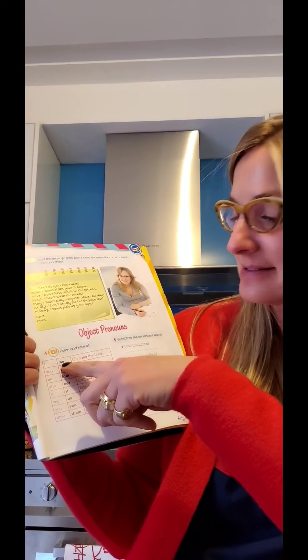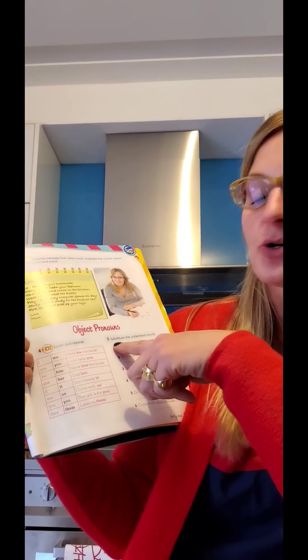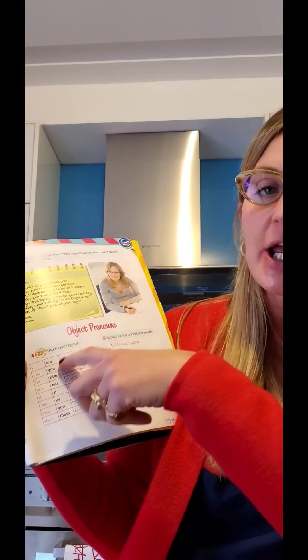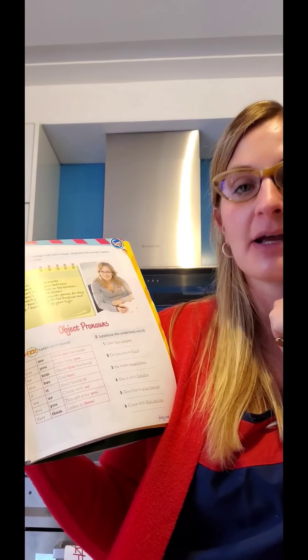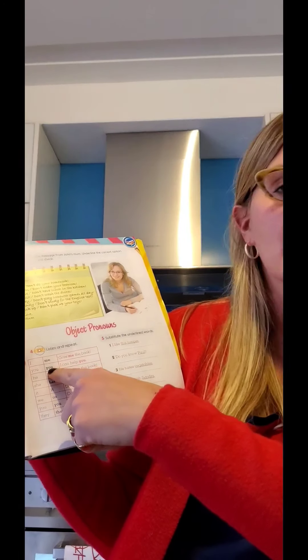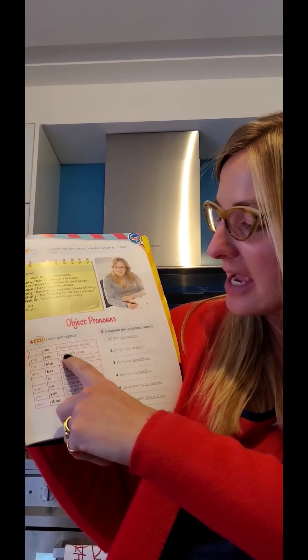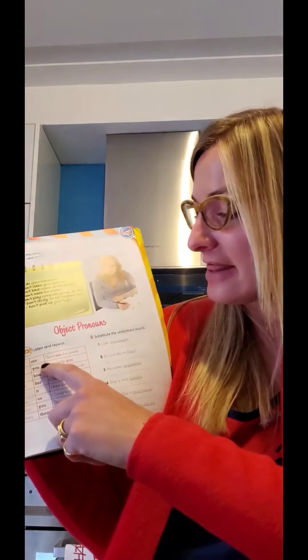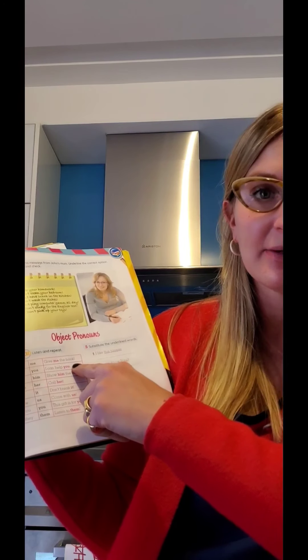Me es a mí. Give me the book — dame a mí el libro. No puedo decir give I, es dame a mí. You queda igual — for example, I can help you — yo puedo ayudarte a ti. Give me the book — dame el libro a mí. Show him the book — muéstrale a él. Estamos hablando de he, y el pronombre objetivo es him. Muéstrale a él el libro.